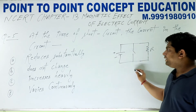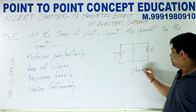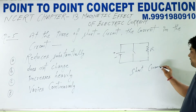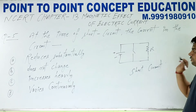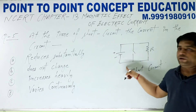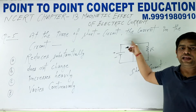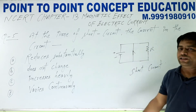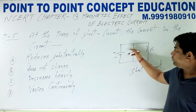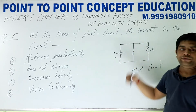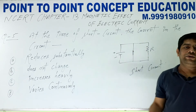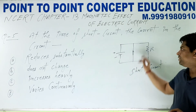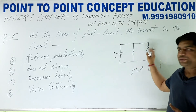Short circuit का मीनिंग क्या है? Short circuit का मतलब होता है — positive और negative wire, या फिर live wire और neutral wire का सीधा contact में आ जाना। अगर हम इसे इस टाइप से close कर देंगे, तो बैटरी का positive और negative, यानी neutral wire और live wire सीधे contact में आ जाते हैं।